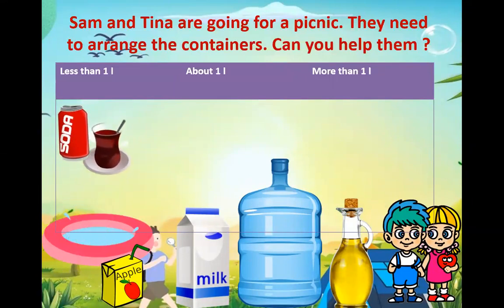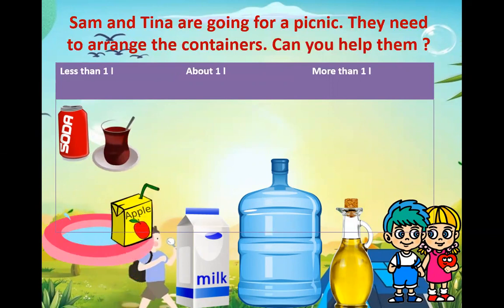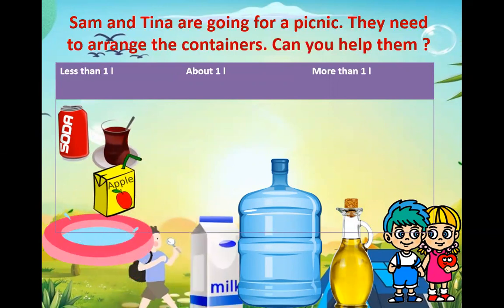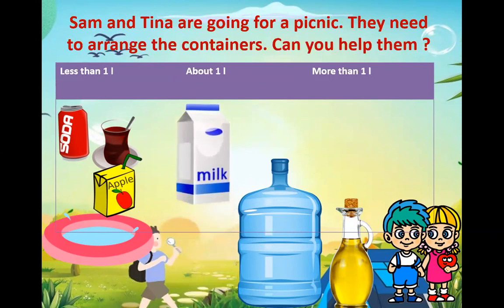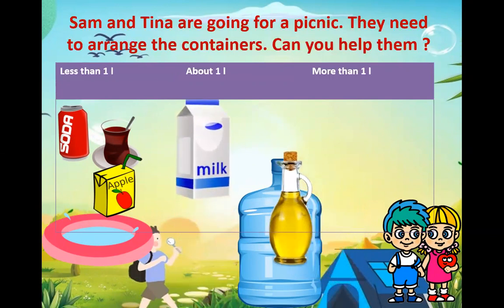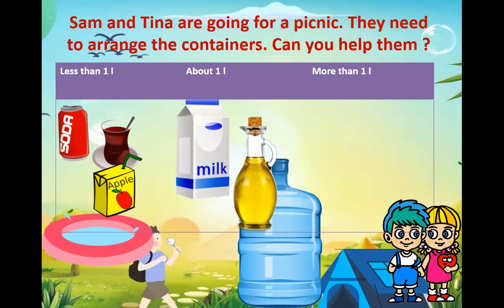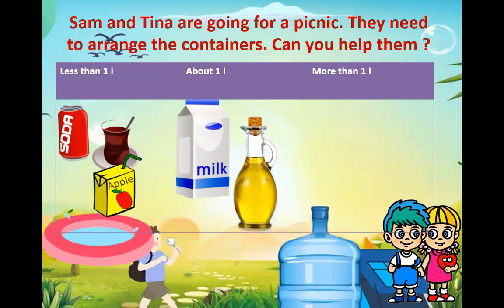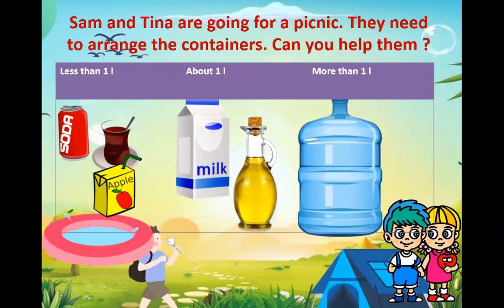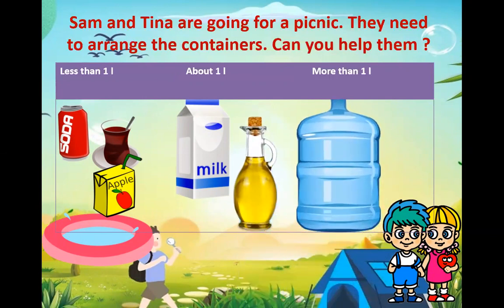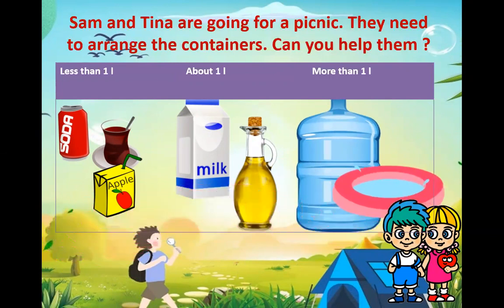The Coke can is less than one liter, the juice box is less than one liter or about one liter. The milk box is about one liter, and the oil is about one liter. The distilled water is more than one liter, and the paddling pool is more than one liter.